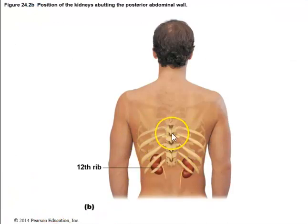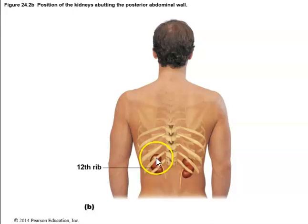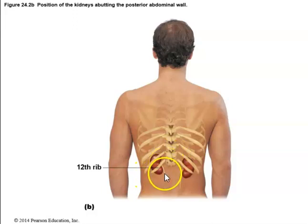A posterior wall picture confirms the location of the kidneys at approximately vertebral level T12 to L3. The kidneys extend just a little bit below the border of the 12th rib.